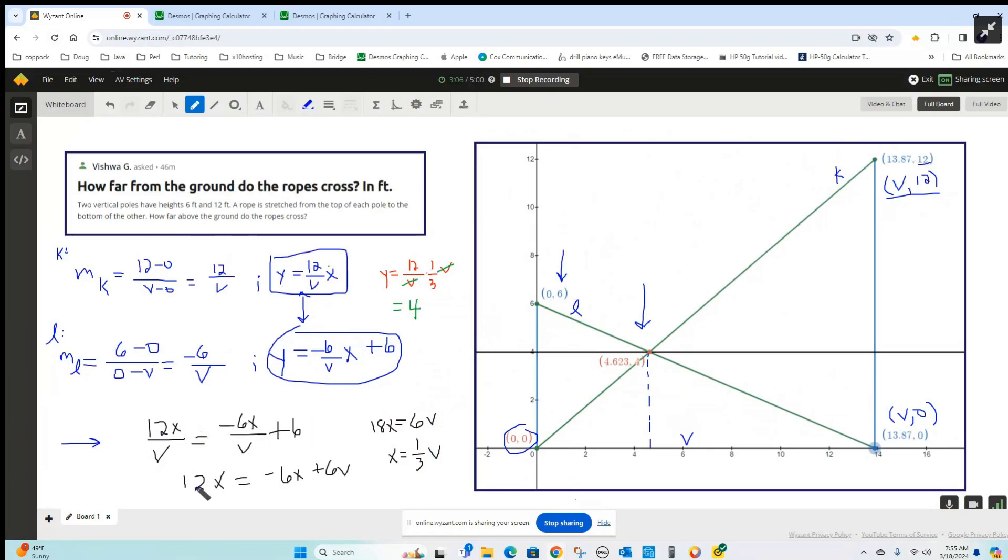Add negative 6X to both sides. 18X equals 6V. So X equals a third of V, or V divided by 3.